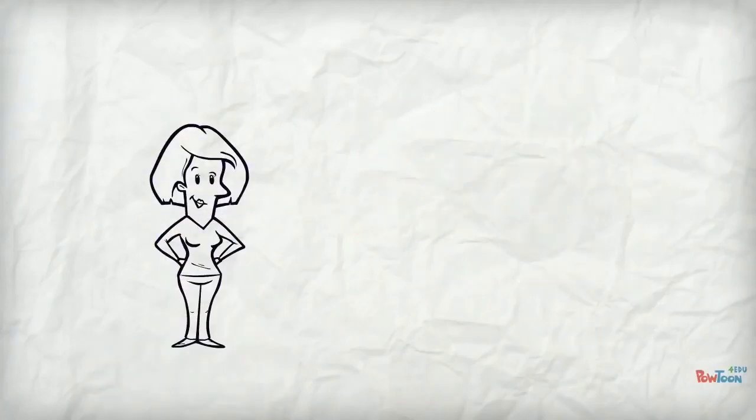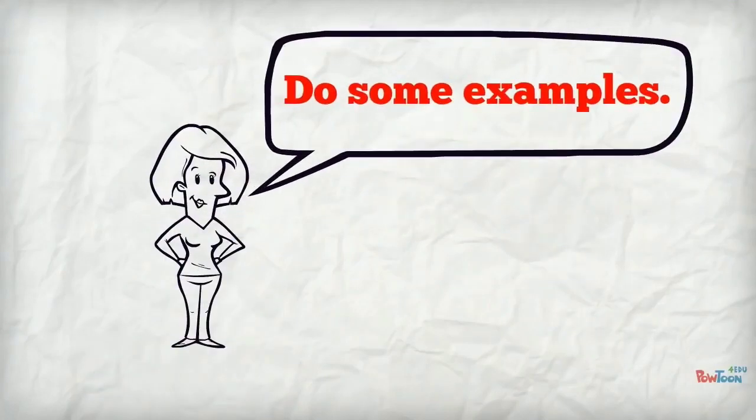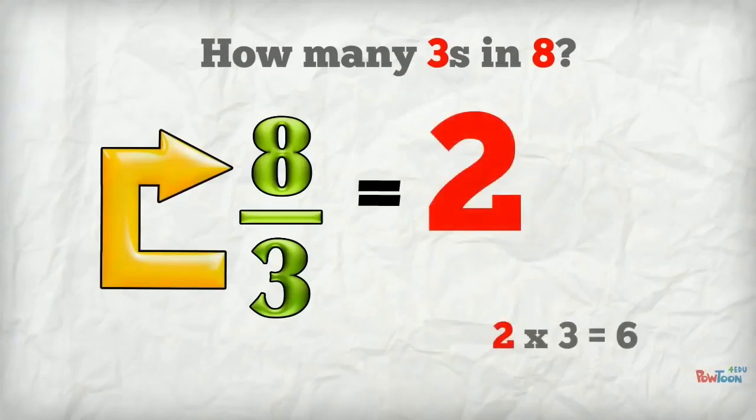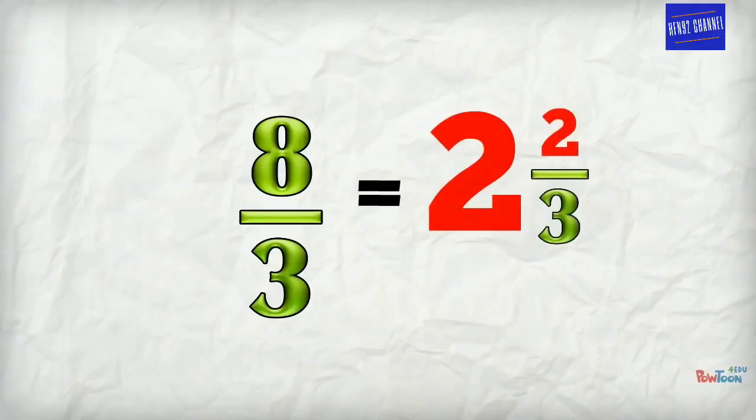OK, now we've proved the method works. It's time to do some examples. Let's do this one. Eight over three. How many threes in eight? Two threes are six, remainder two. Use the original denominator. We're done.